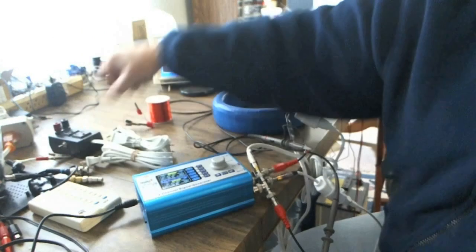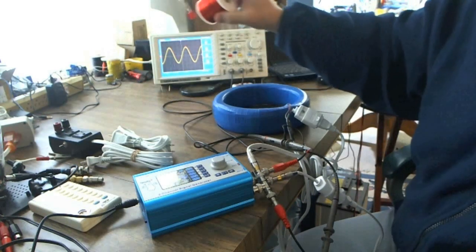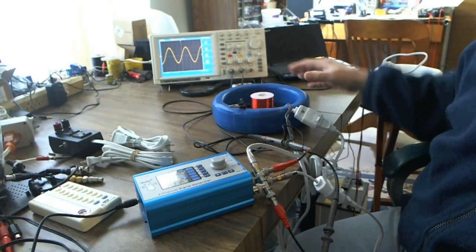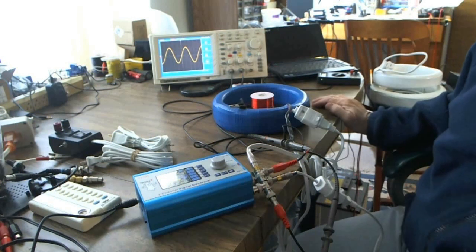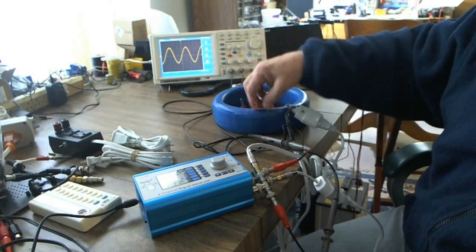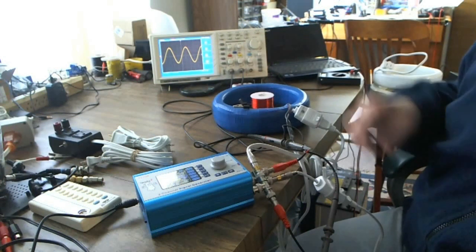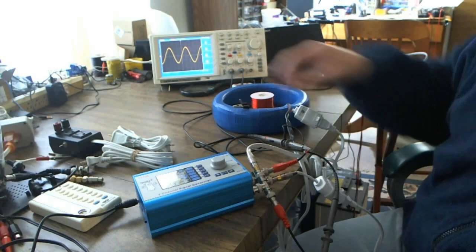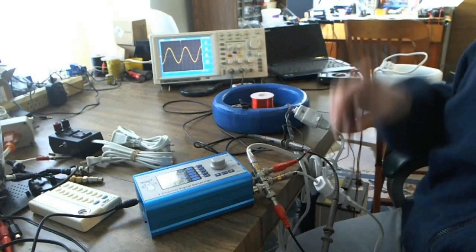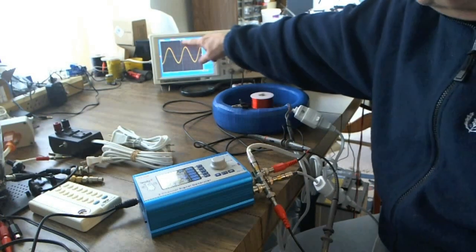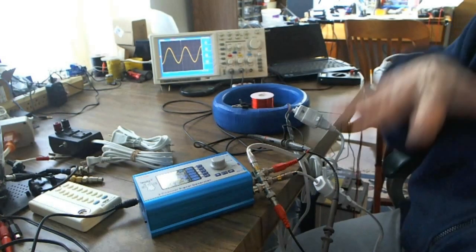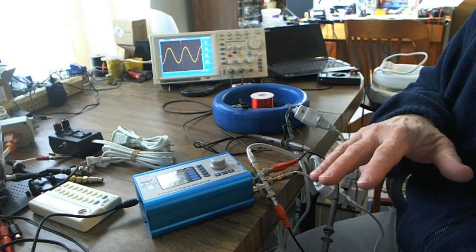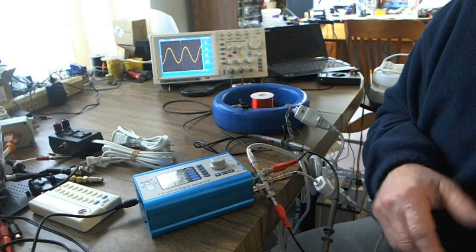I have a receiving coil right here. I'll put it in the center of the big bi-filler coil and connect up a scope to it. I don't have a three-channel scope, so I have to disconnect one of my channels. I'm going to demonstrate the addition of two waves, how they actually add. Then I'm going to demonstrate a scalar wave.